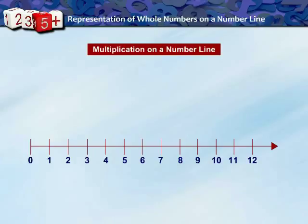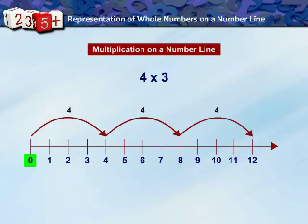Let us now see multiplication of whole numbers on a number line. To find 4 multiplied by 3, that means taking 4 steps 3 times. Starting from 0, take 3 jumps towards the right, each of 4 steps. We reach 12, so 4 × 3 = 12.